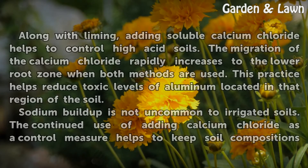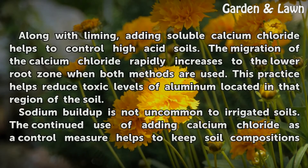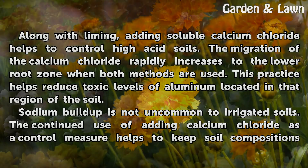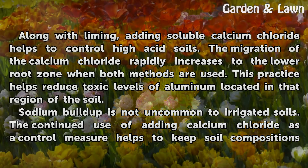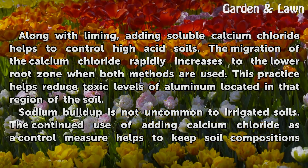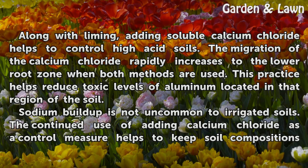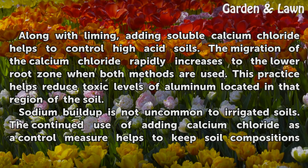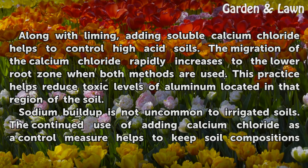Along with liming, adding soluble calcium chloride helps to control high acid soils. The migration of the calcium chloride rapidly increases to the lower root zone when both methods are used. This practice helps reduce toxic levels of aluminum located in that region of the soil.